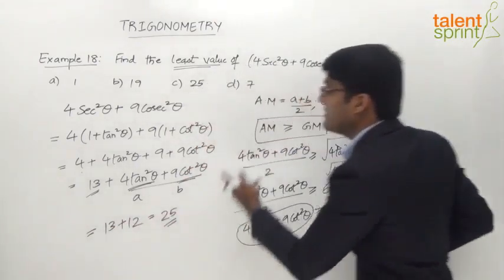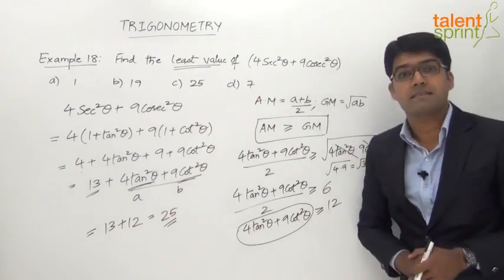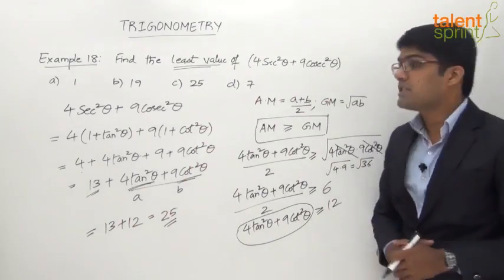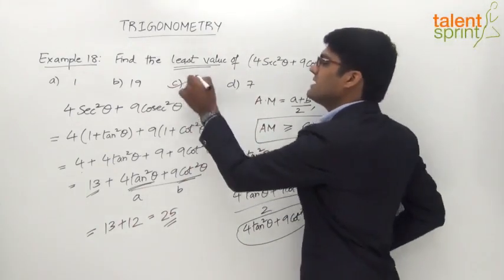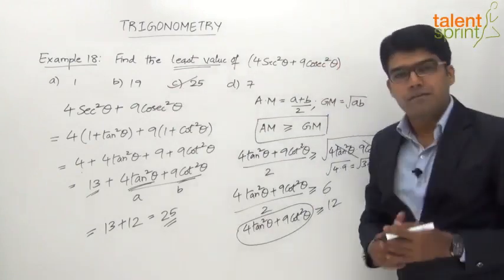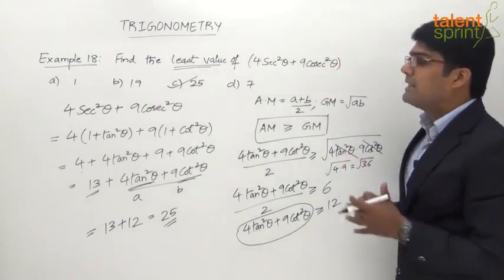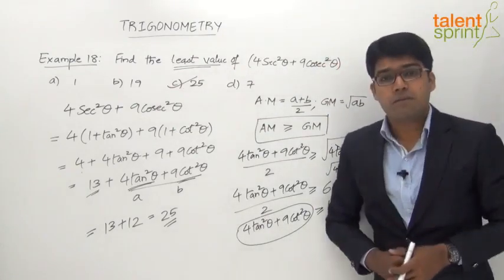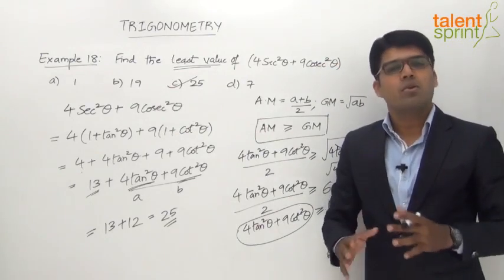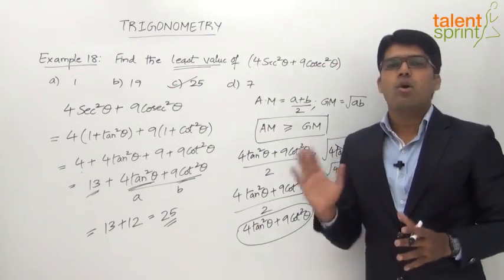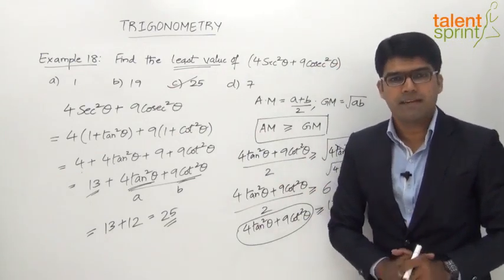So the minimum value for the given equation 4sec²θ + 9cosec²θ is option C: 25. This is an important method to follow to arrive at the minimum or least value of a given trigonometric equation.